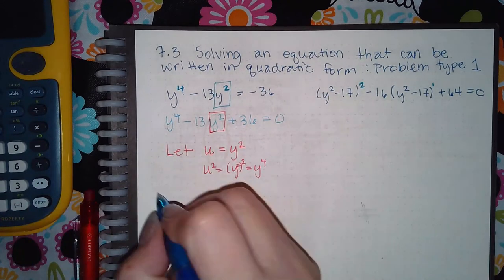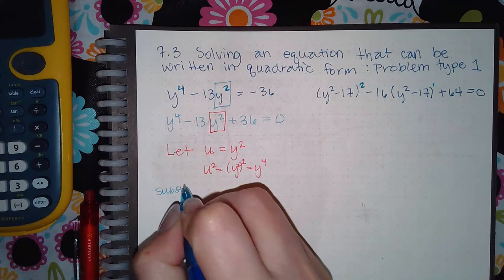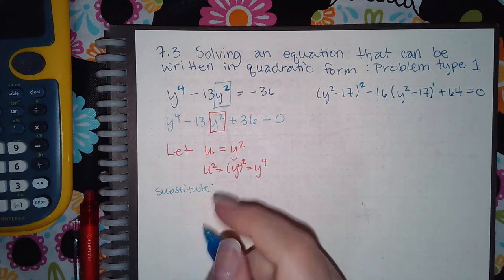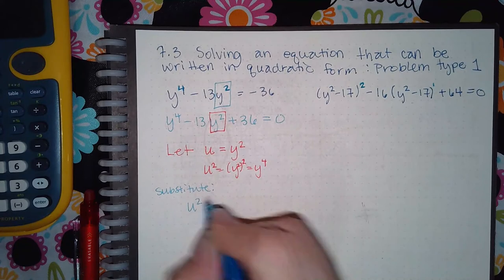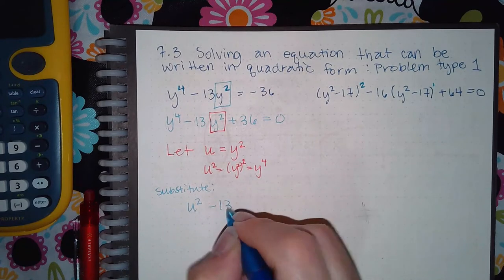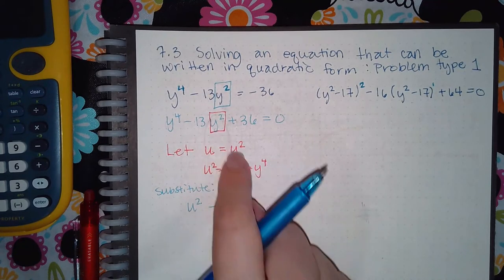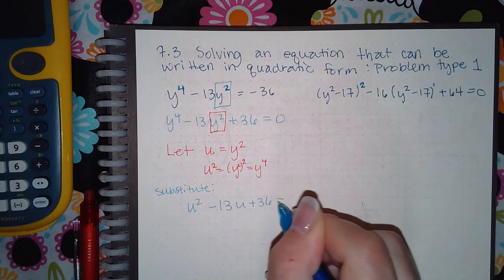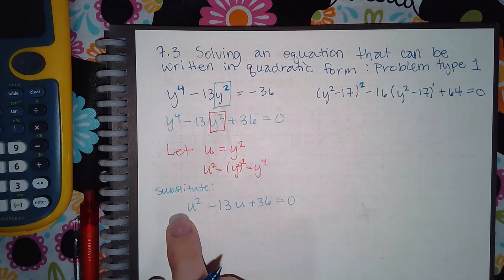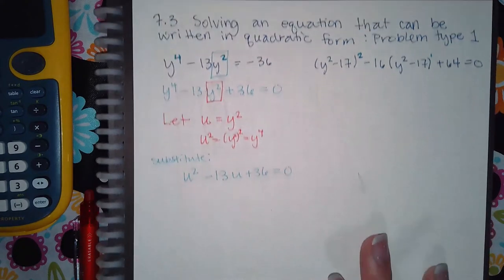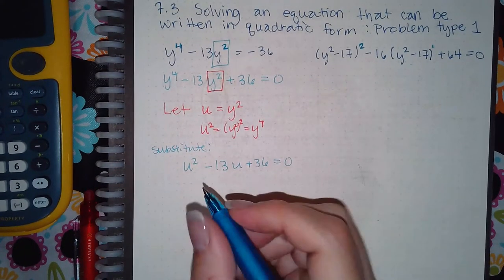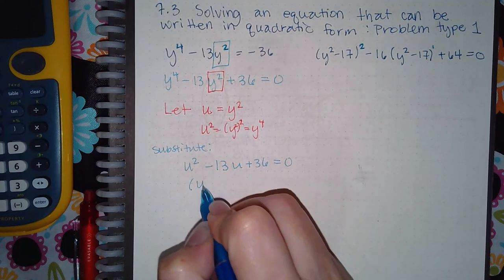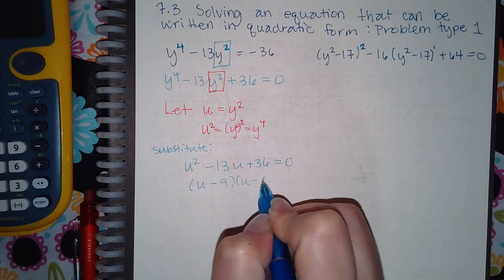So, I'm going to substitute. Instead of using y to the fourth, I'm going to use u squared. Minus 13. And instead of using y squared, I'm going to use u. And then because there's no number in front, I actually can factor this. And I will factor it if it's at all possible, because it is faster.